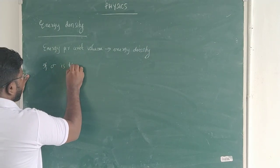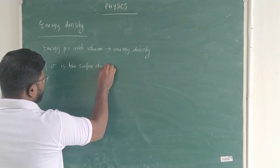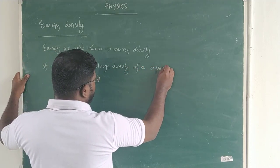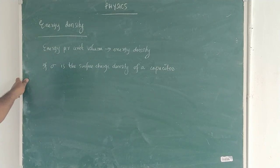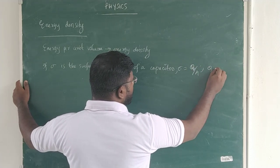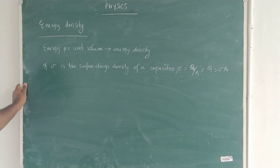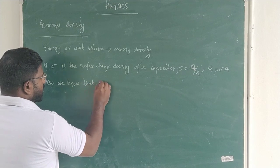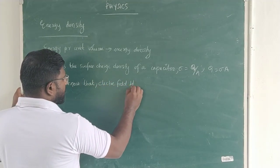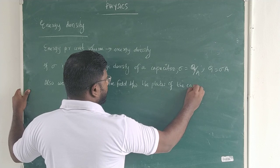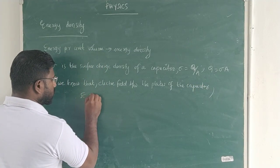If sigma is the surface charge density of a capacitor, we know that sigma is equal to Q by A, or Q is equal to sigma times A. Also, we know that the electric field between the plates of the capacitor is E equal to sigma by epsilon zero.